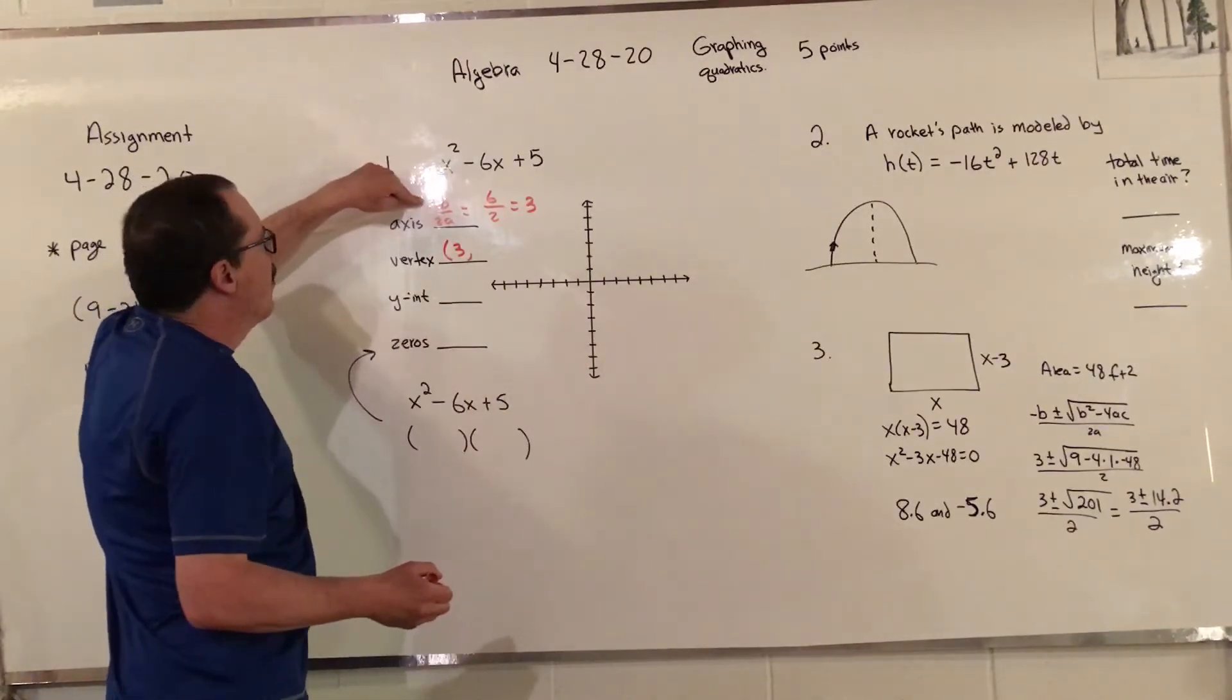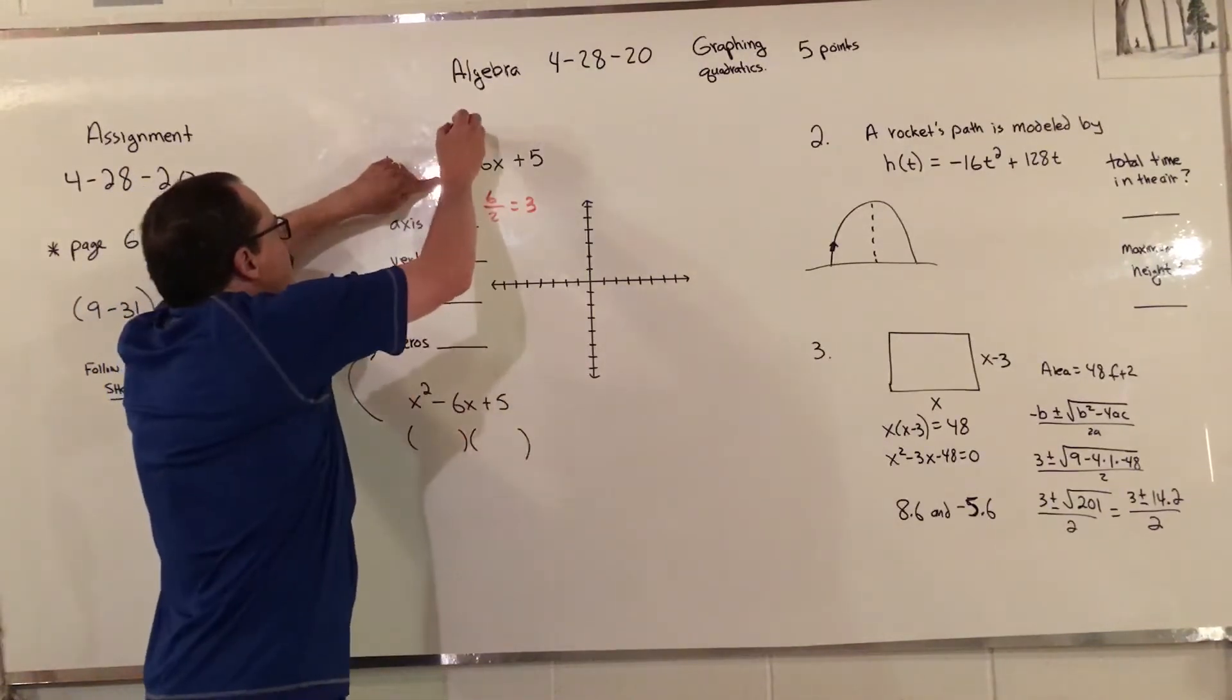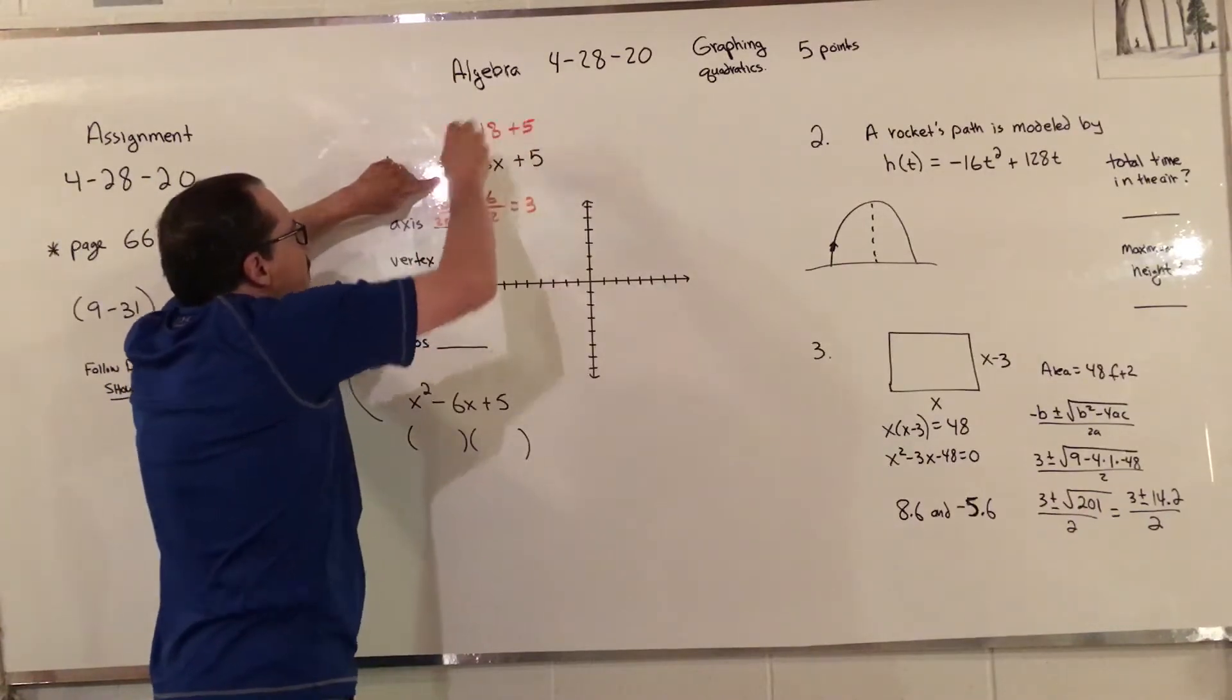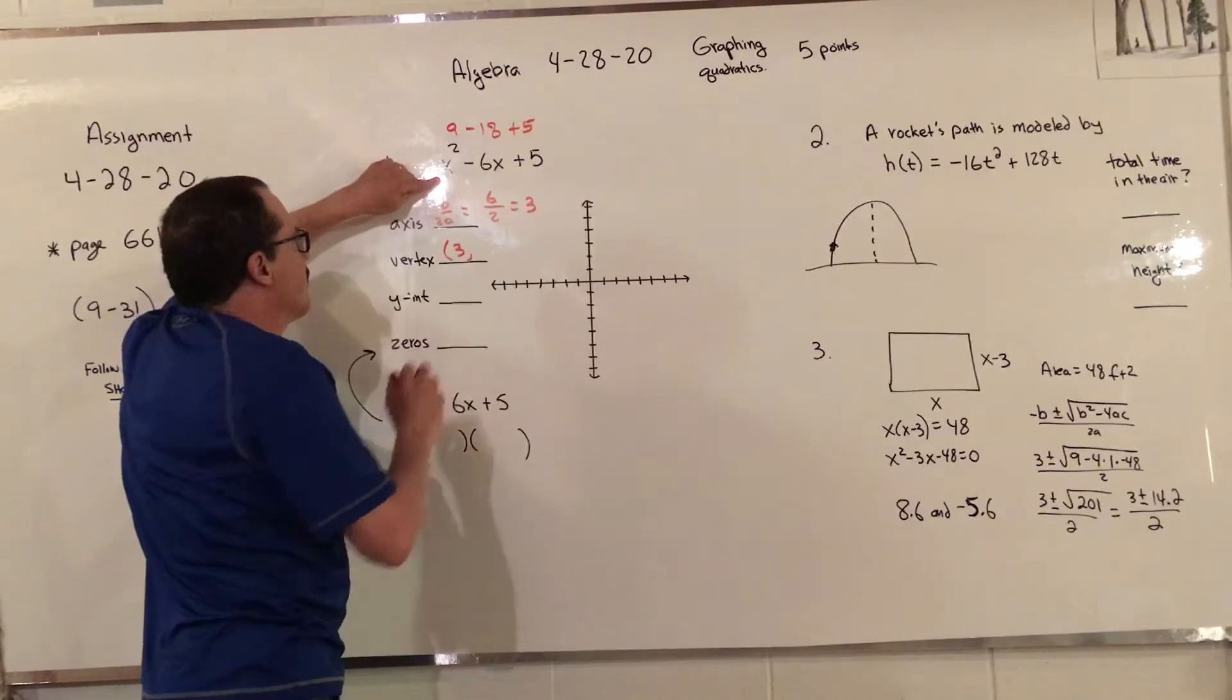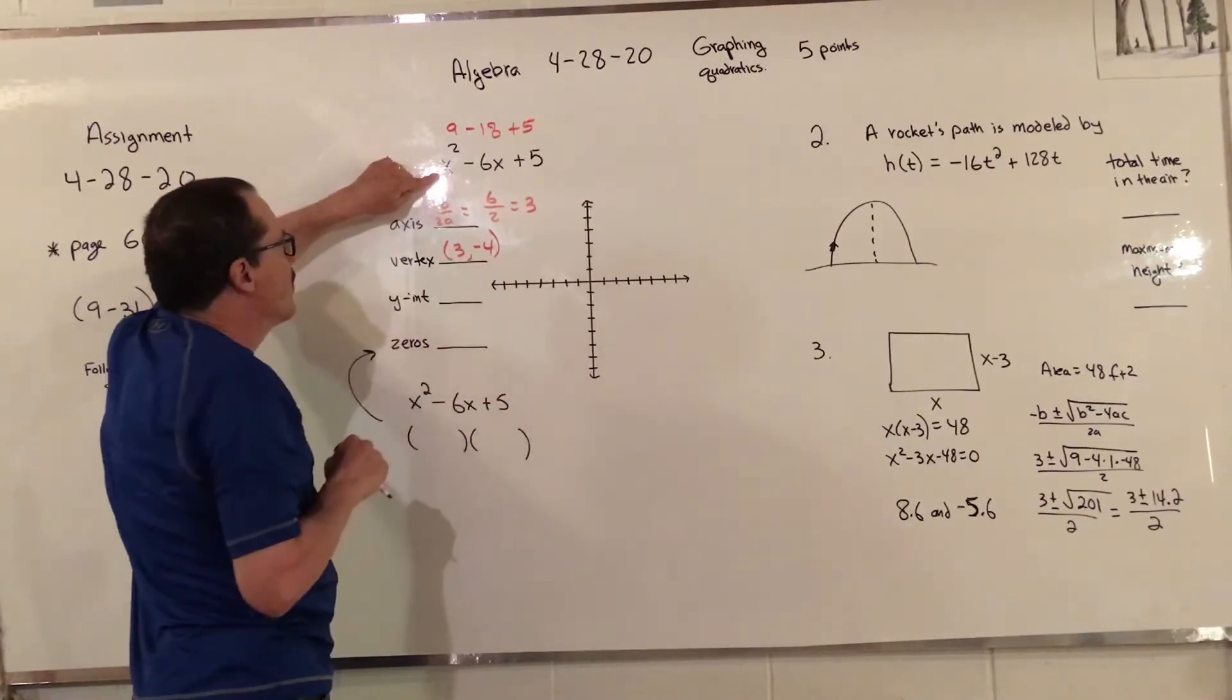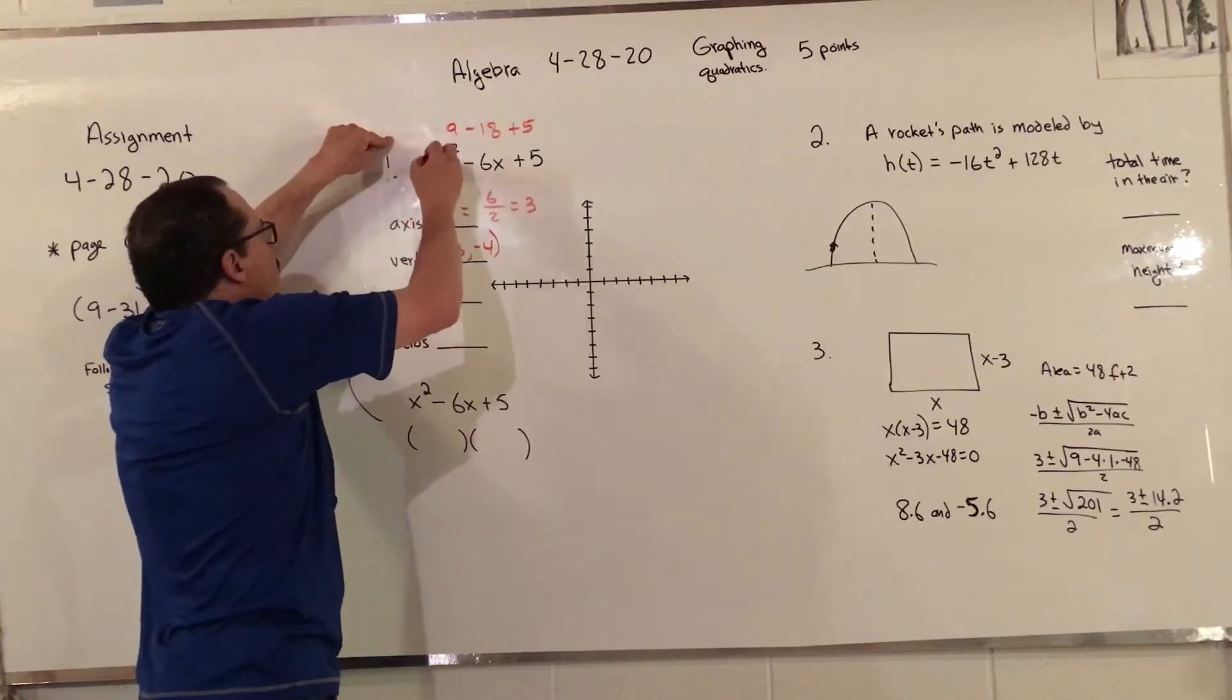I'm going to plug 3 in here and so I get 9 minus 18 plus 5. 9 minus 18 is negative 9 plus 5 is negative 4. This opens up, I know that already, so I'm going to write that down.